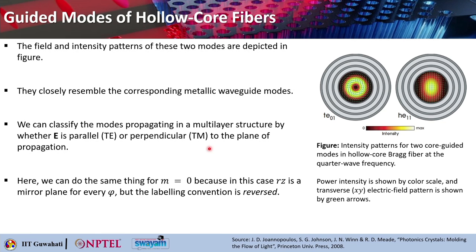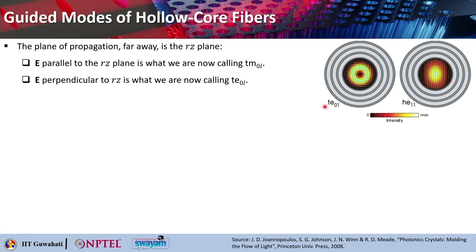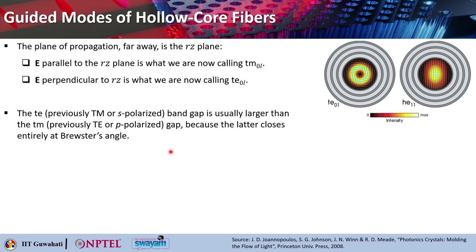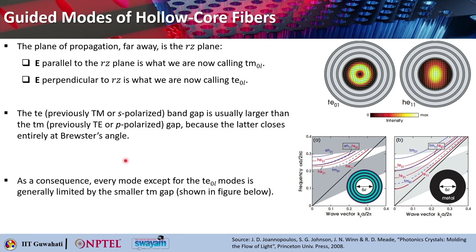We can do the same thing for M equals 0, because in this case Rz is basically a mirror plane for every phi. The labeling convention is basically reversed: the plane of propagation far away is basically the Rz plane. Electric field can be parallel to that Rz plane, which we are calling TM₀L, and electric field can be perpendicular to the Rz plane, which we are now calling TE₀L. The TE band gap — which was previously the TM band gap or the S-polarized one — is usually larger than the TM gap, but because the latter one closes entirely at the Brewster's angle, every mode except for the TE₀L mode is generally limited by the smaller TM gap.